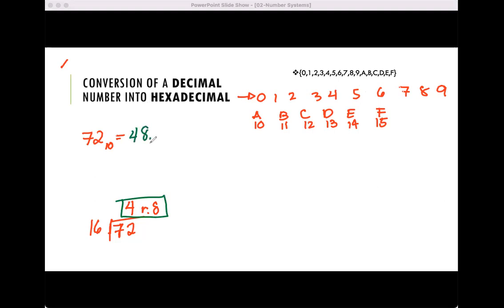Let's have another example. Let's say 4172 base 10. Let's convert it to hexadecimal. So let's divide 4172 divided by 16. We will have 260 with the remainder of 12.